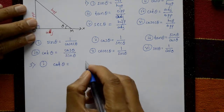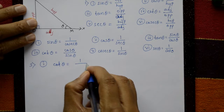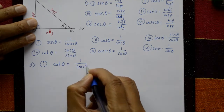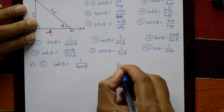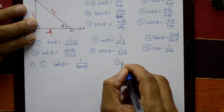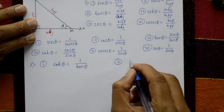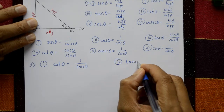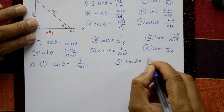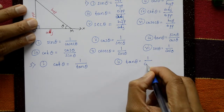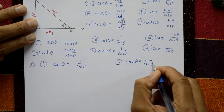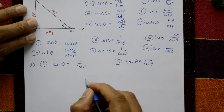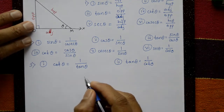Cot theta is one upon tan theta. Tan theta means one by cot theta — just an exchange. Very simple.